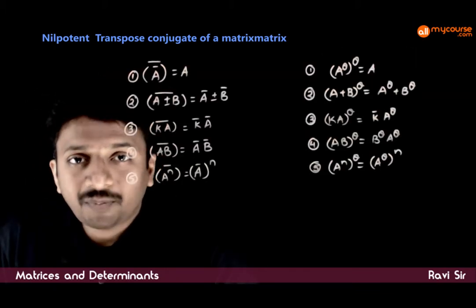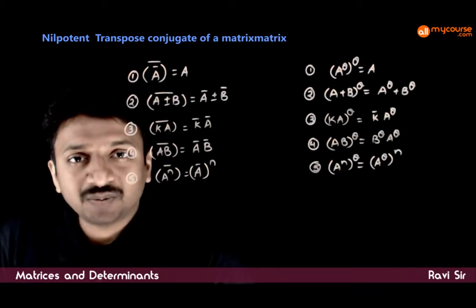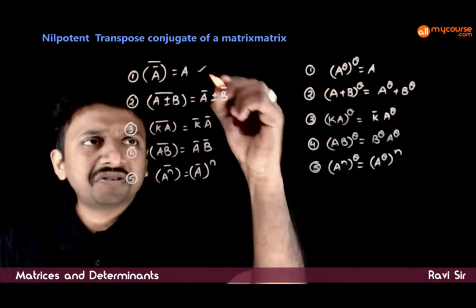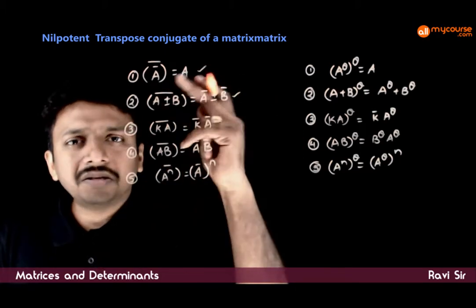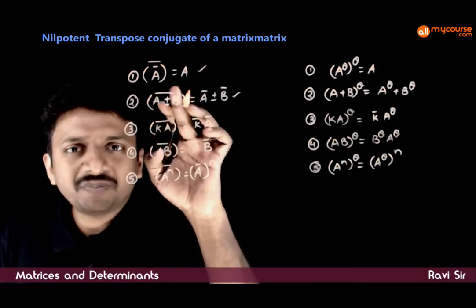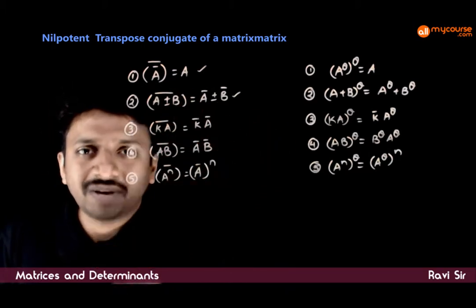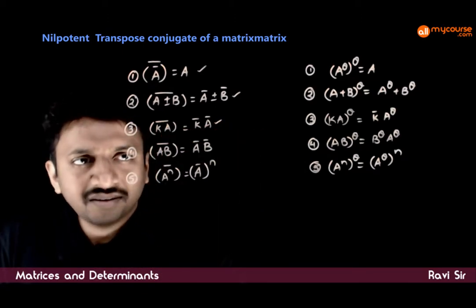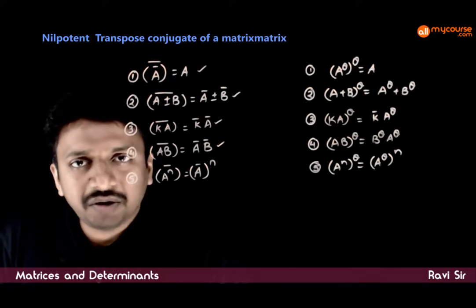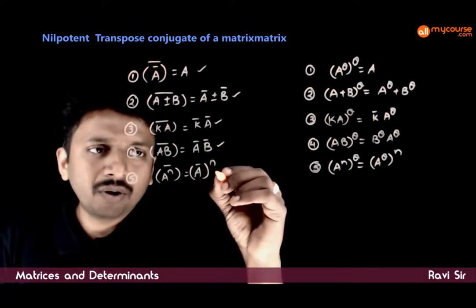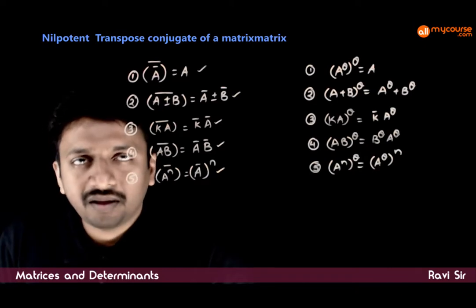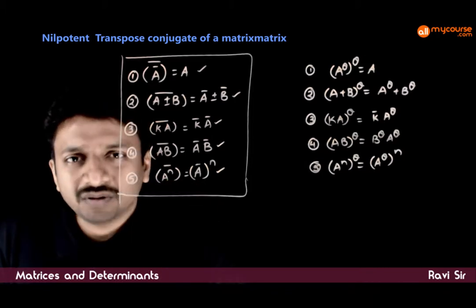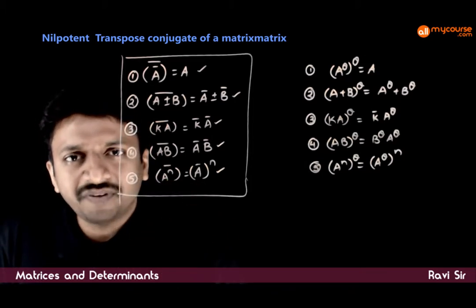There are some standard properties of conjugates and transpose conjugates that you need to remember. Most of them are very straightforward: A conjugate whole conjugate is A; (A ± B) conjugate is A conjugate ± B conjugate; (kA) conjugate is k conjugate times A conjugate; (AB) conjugate is A conjugate times B conjugate; and A^n conjugate is (A conjugate)^n. These properties will be useful in simplification in problems.